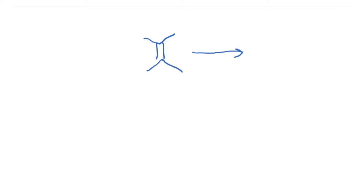In the previous lecture, we were trying to add dihydroxyl groups to an olefin. There are two major methods by which you can add two hydroxyl groups to an olefin. One is the MCPBA method, where you first make an epoxide followed by hydrolysis.